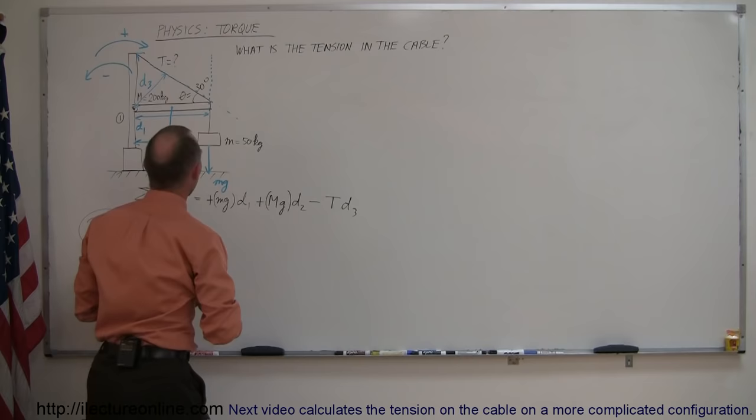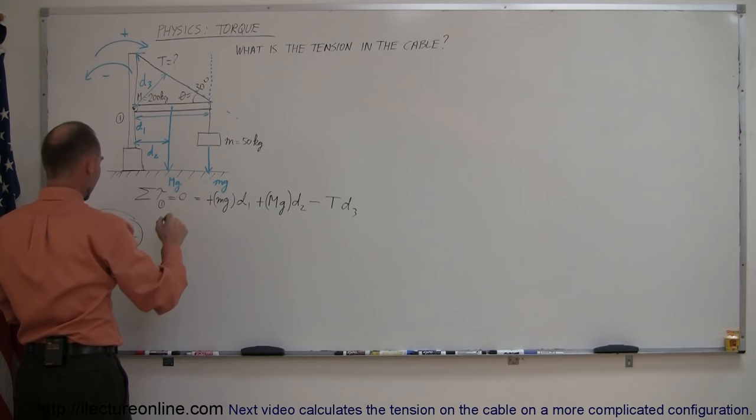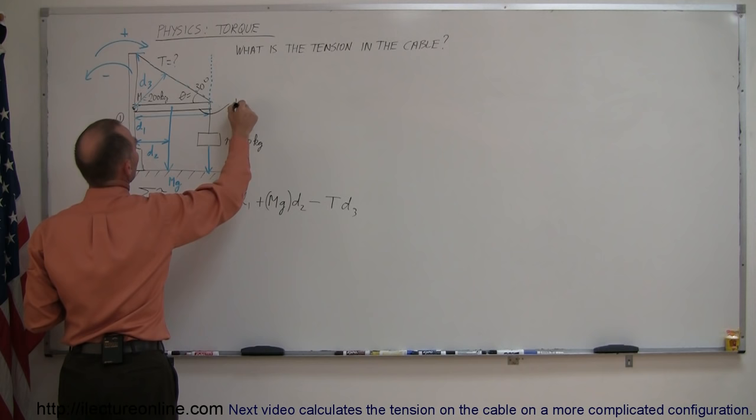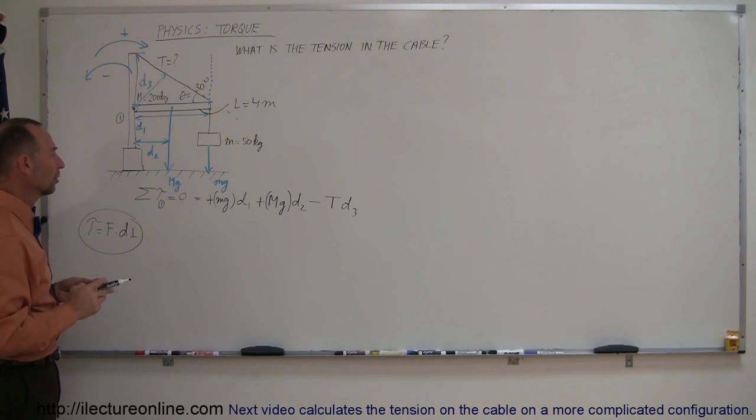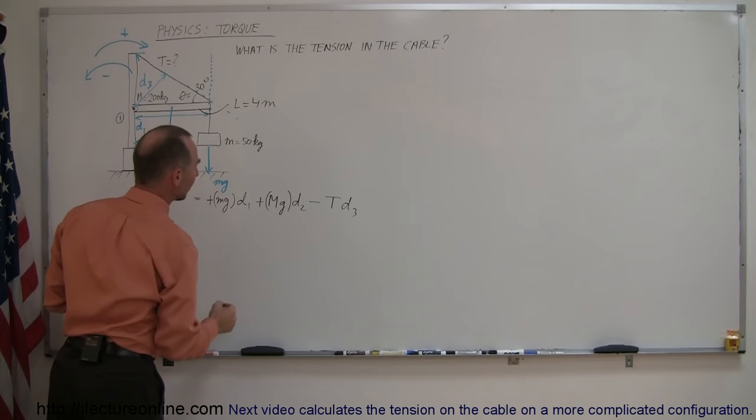The beam has a mass of 200 kilograms and the hanging weight has a mass of 50 kilograms. Let's say the length of the beam is 4 meters. Setting the sum of torques equal to zero and plugging in: d1 equals L — the full length of the beam — and d2 equals L/2 — half the length of the beam — giving us: 0 = mg·L + Mg·(L/2) − T·d3.